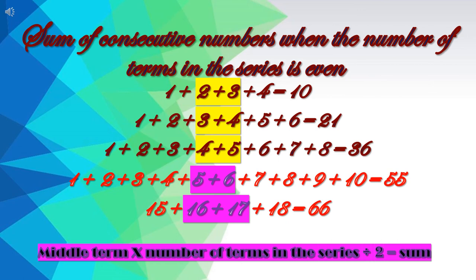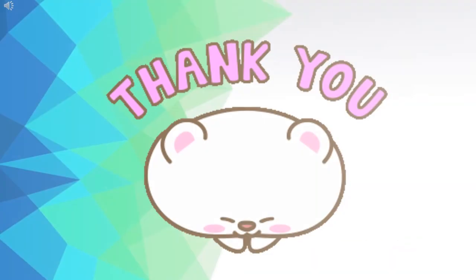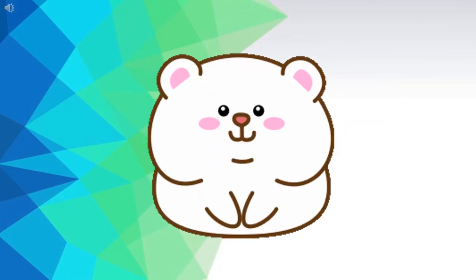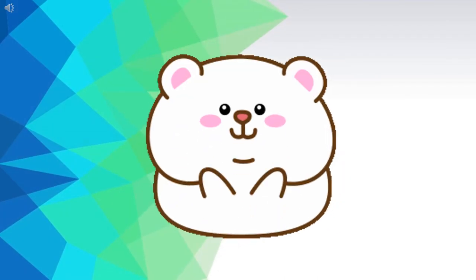So the pattern here is: the sum of consecutive numbers when the number of terms in the series is even equals the sum of the middle terms multiplied by the number of terms divided by 2. So children, that's all for today. Thank you so much.